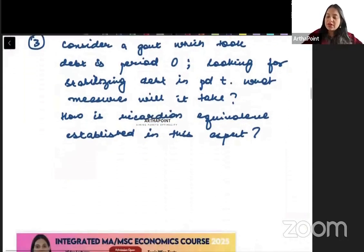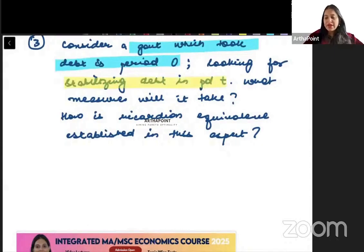The third question beta. It goes ahead and says consider a government which took debt in period 0 and it wants to go ahead and stabilize debt in period t. Now here instead of period t, they can say it wants to stabilize debt in period 1. It wants to stabilize debt in period 2. Aise kuch bhi karke de sakte hai. They can also specify t ka value. They can go ahead and give you some value of t.